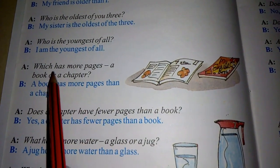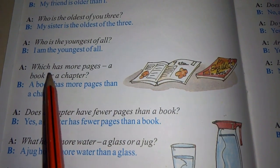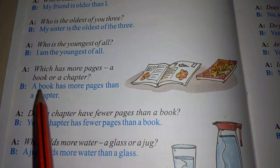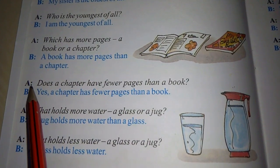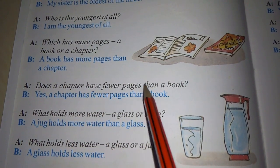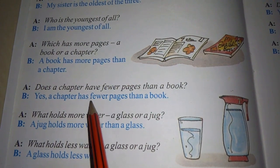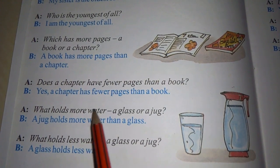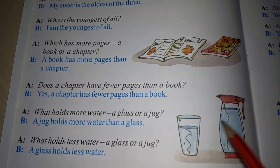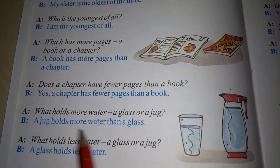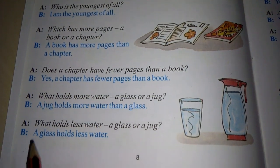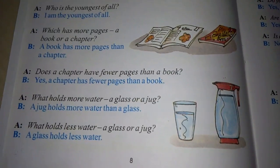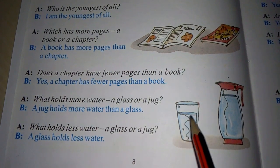Now A asked, 'Which has more pages, a book or a chapter?' Then A asked, 'Does a chapter have fewer pages than a book?' Then B replied, 'Yes, a chapter has fewer pages than a book.' Then A asked, 'What holds more water, a glass or a jug?' Then B replied, 'A jug holds more water than a glass.' Then again A asked, 'What holds less water, a glass or a jug?' Then B replied, 'A glass holds less water.'